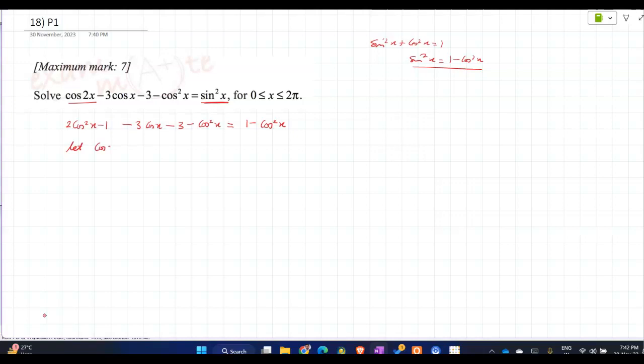If you get confused, you can also substitute. Let cos x be equal to y. So this will become 2y² minus 1 minus 3y minus 3 minus y² is equal to 1 minus y².